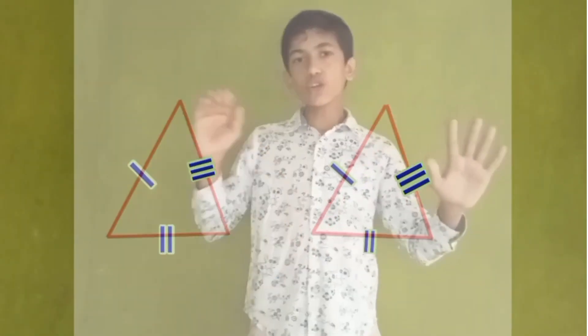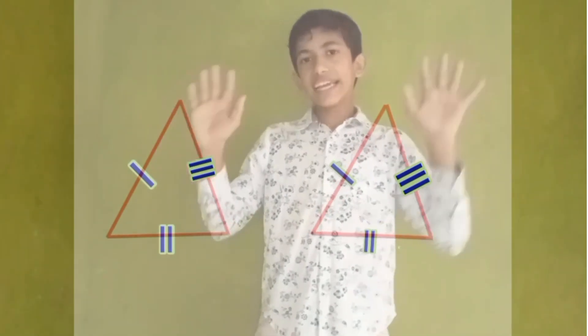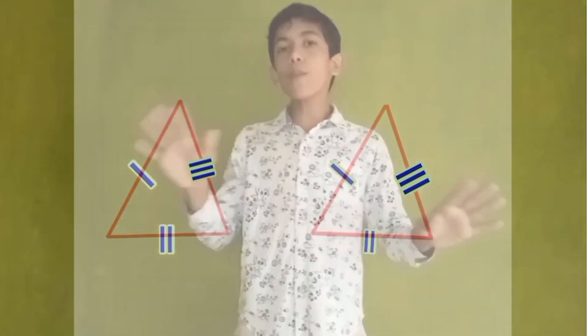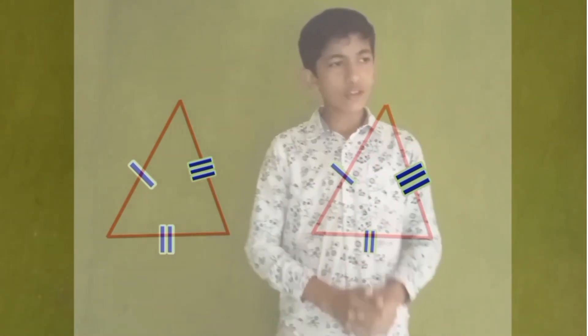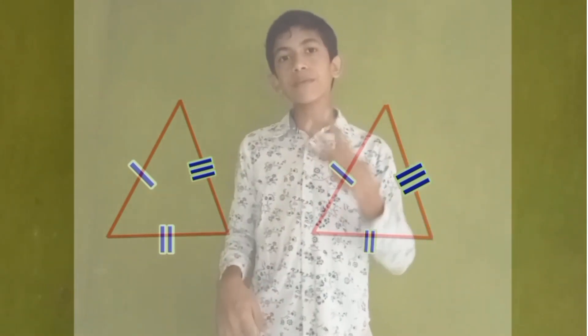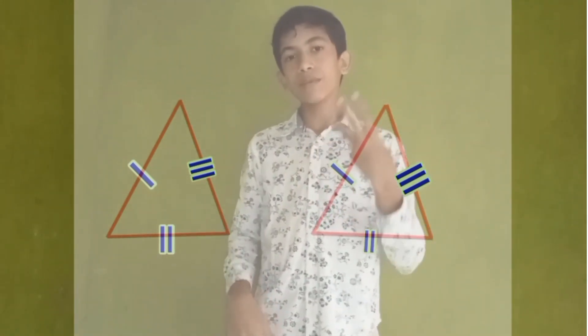What is congruency? I will explain my new congruency rule. Congruency means the two triangles should be equal to each other in all points of view. At maximum, six things are required — all sides and all angles. But it's only three things enough to prove that two triangles are congruent.